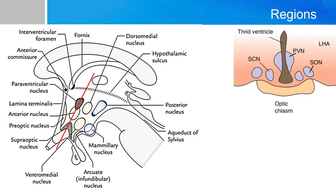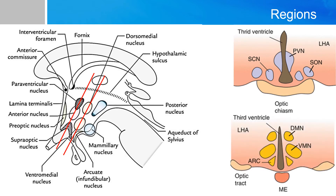If you go a little bit posterior and draw another line, this layer is called the tuberal region, which is above the tuber cinereum, and its nuclei are mostly the ventromedial and the dorsomedial nuclei, as well as the arcuate nucleus. A further posterior plane directly above the mammillary bodies is called the mammillary region, and its nuclei include the mammillary nucleus and the posterior nucleus.